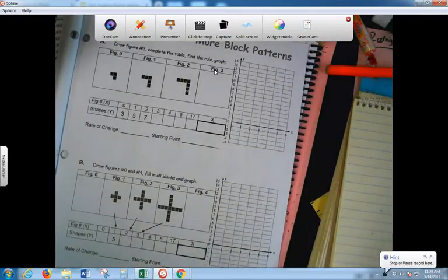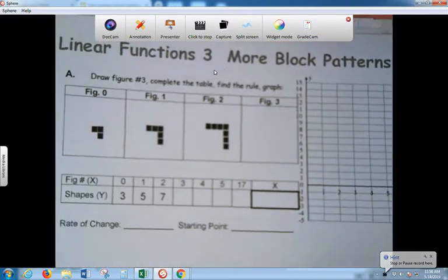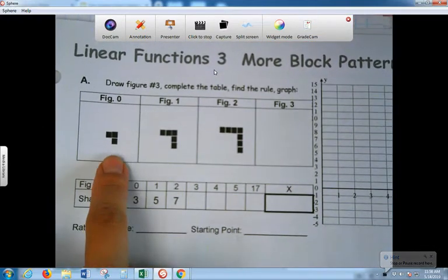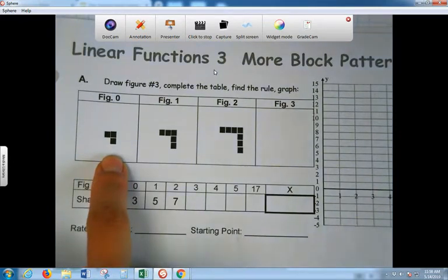Okay, so we're on page 7 of your packet, linear functions. So look at figure 0. How many blocks? 3. So let's write down 3.